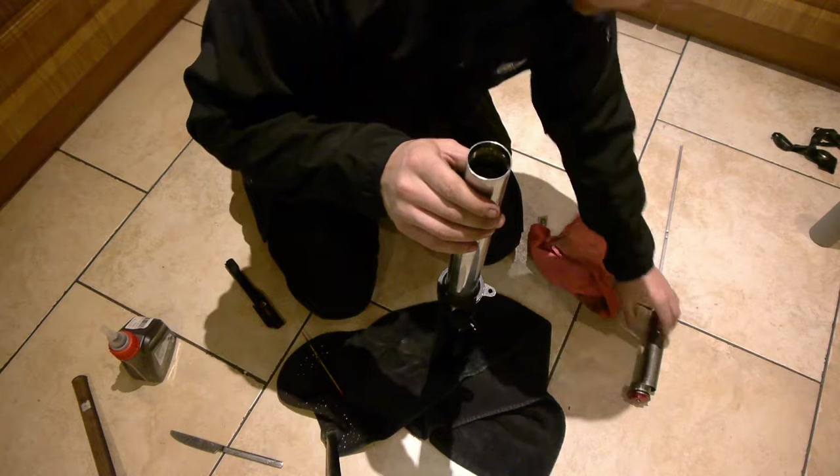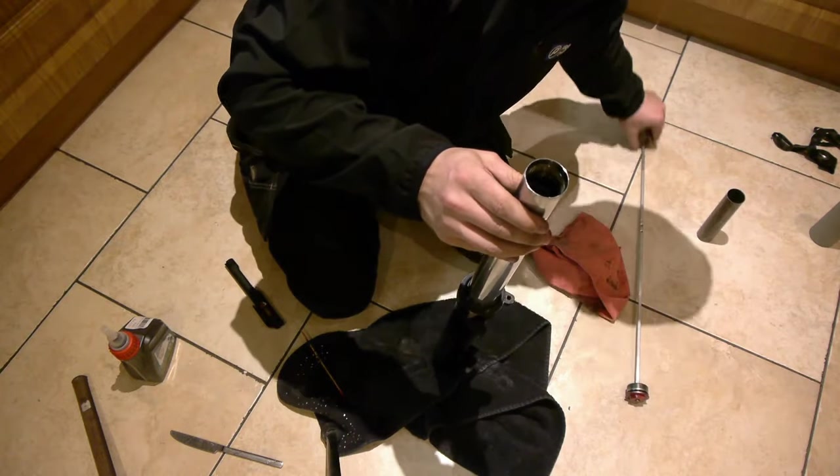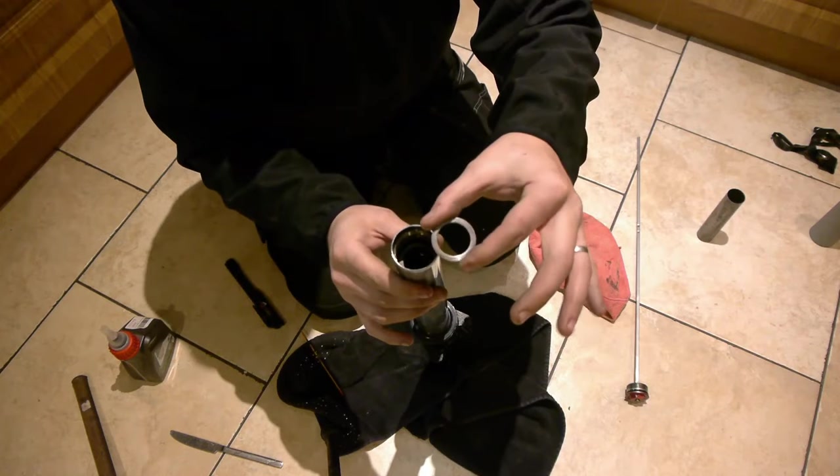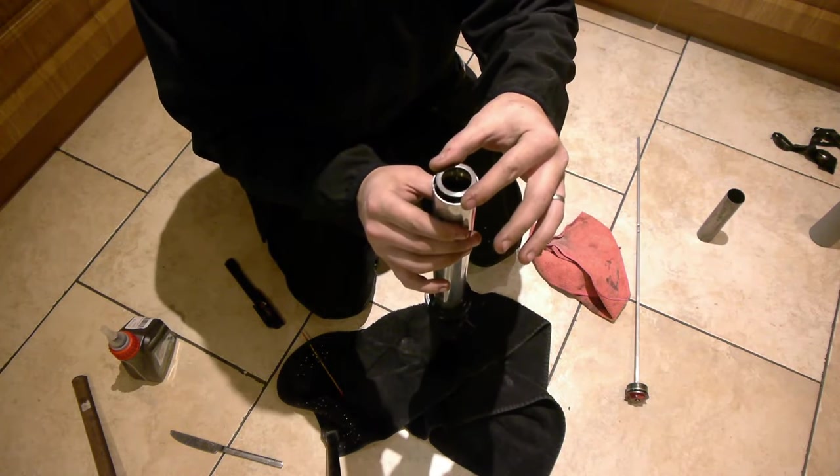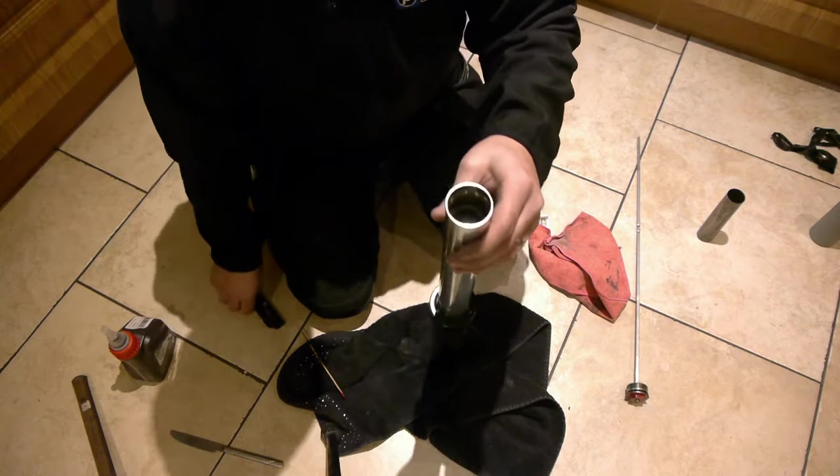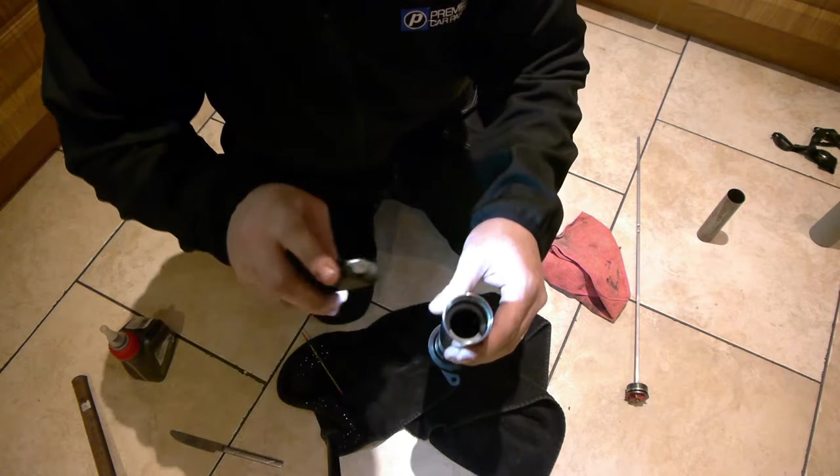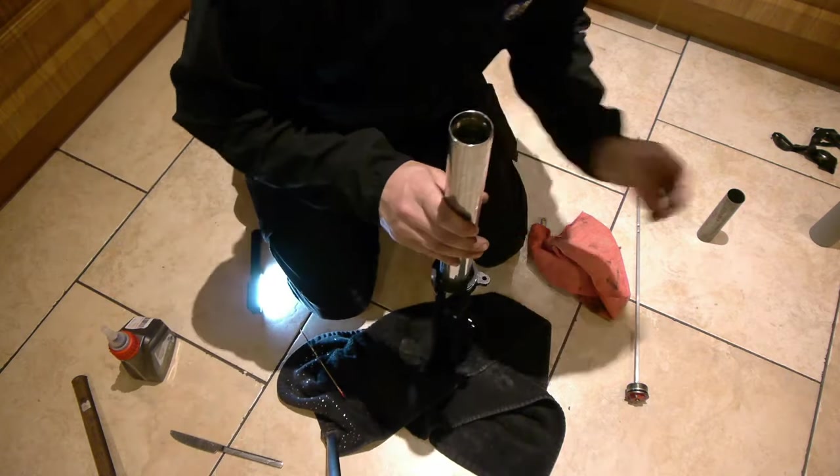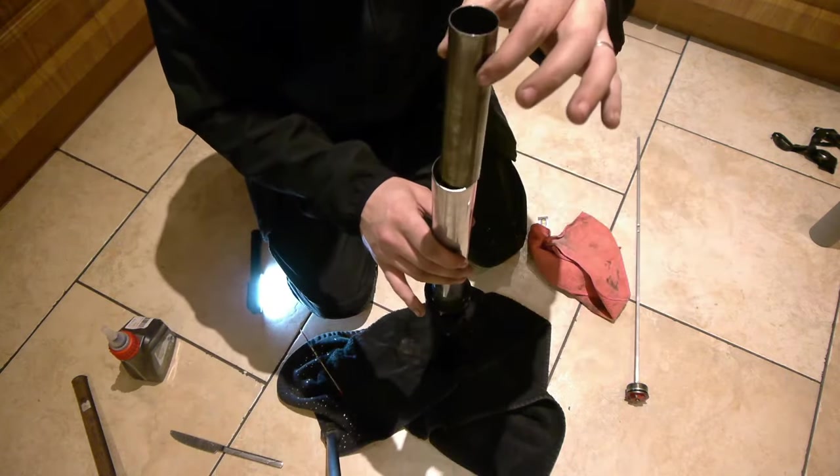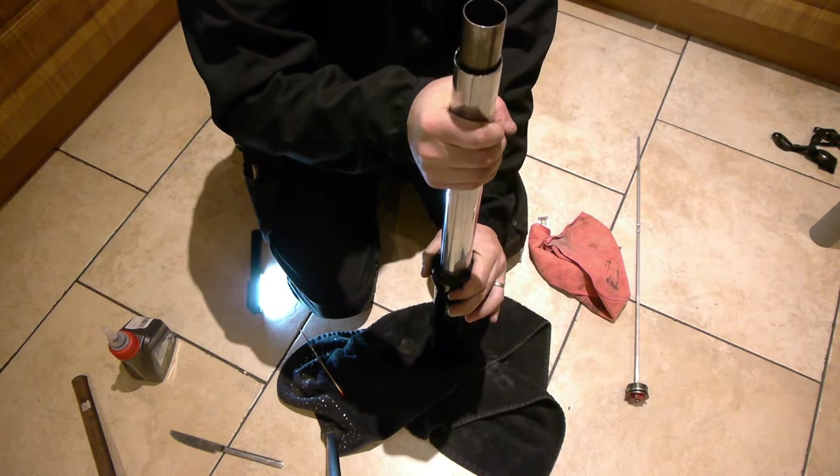So next, the little washer. Not make that mistake twice. Just make sure that it's down in nicely on top of the spring there. Next the spacer tube. Now this time we'll have to fully extend the shock.